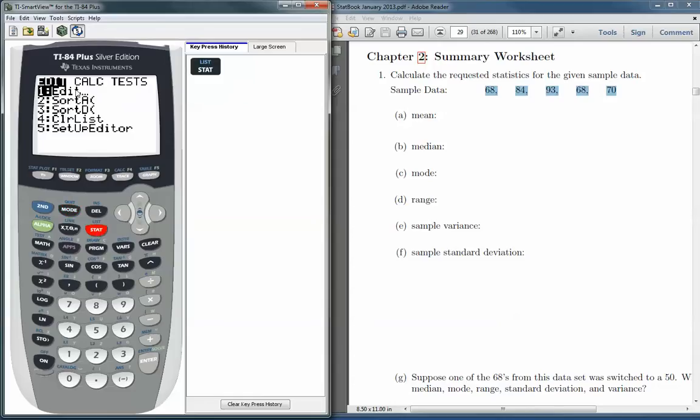And that gives us a menu of items here on the top row. There's Edit, and you can navigate that by hitting the left or right arrow. So if I wanted to do calculations, I'd highlight Calc, or I can run some tests by going over to Test. But in this case, we actually want to edit a list, so we're going to go back to Edit.